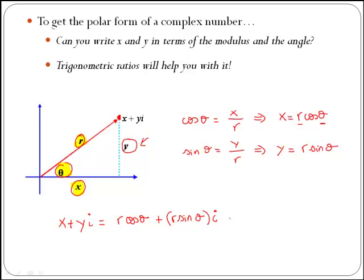Then we have almost what is called the polar form of a complex number. If we take just r as a common factor, then we have r by cos of theta plus i sin of theta.